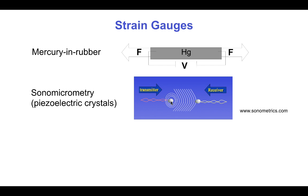An alternative technique that doesn't require physical contact across the interval is sonomicrometry using piezoelectric crystals. One piezoelectric crystal is implanted in the tissue and stimulated by a high-frequency electrical source, causing it to vibrate and send ultrasonic waves — this is the transmitter. When the vibration reaches a second crystal, the receiver, it induces a measurable current. Knowing the speed of sound in the tissue, the phase delay between the transmitter's oscillation and the receiver's signal can be calibrated to measure the real-time distance — and thus strain — between the two crystals.